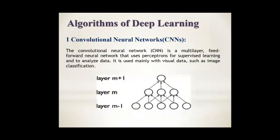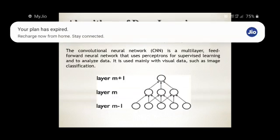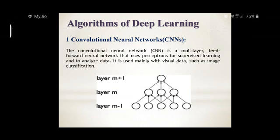Algorithm of deep learning. Different types of algorithms. First one, convolutional neural network. Convolutional neural networks is a multi-layer feedforward network. It is used for supervised learning and to analyze data. It contains different types of layers: layer m plus 1, layer m, layer m minus 1, different layers. It is mainly used for visual data such as image classification, recommendation engines, and pattern recognition.